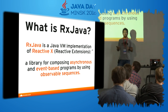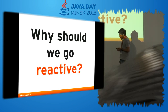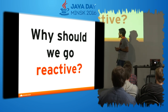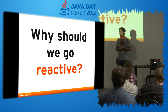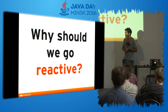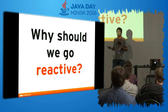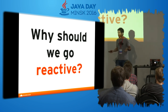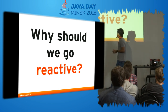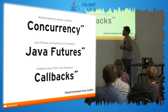RxJava is a library for composing asynchronous and event-based programs by using observable sequences. This might sound a little bit weird in the beginning. I want you to have an idea of why it's good to go reactive, and what problems reactive programming tries to solve — there are no silver bullets, right? But I think we are facing some certain problems, especially when it comes to concurrency.